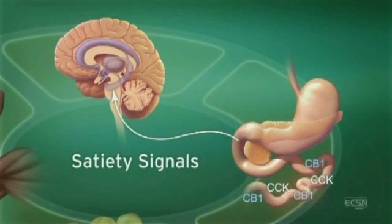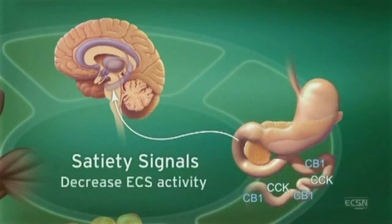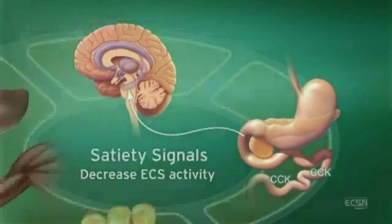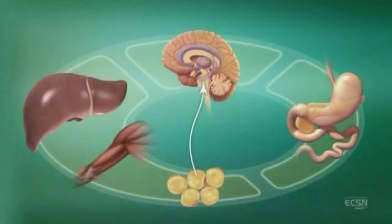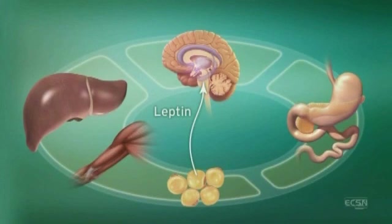After eating, cholecystokinin in the duodenum triggers satiety signals. Subsequently, ECS activity is decreased through suppression of CB1 expression. An increase in the adiposity hormone leptin decreases endocannabinoid levels in the hypothalamus and decreases food intake.